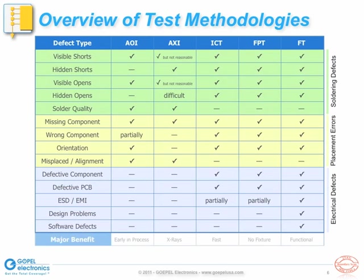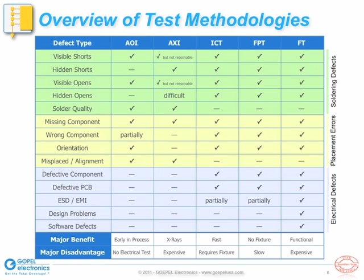Each of the five methods discussed here has its merits. AOI, for example, can be used very early in the manufacturing process, keeping the rework cost low. The downside of AOI, however, is the lack of verification of the unit under test's electrical properties. Automated x-ray inspection has the benefit of using x-rays — it can be used to inspect hidden solder joints that otherwise may be difficult to verify. AXI equipment is very expensive, though, and test execution time can be lengthy. Also, x-ray equipment does not verify any electrical properties of the unit under test.